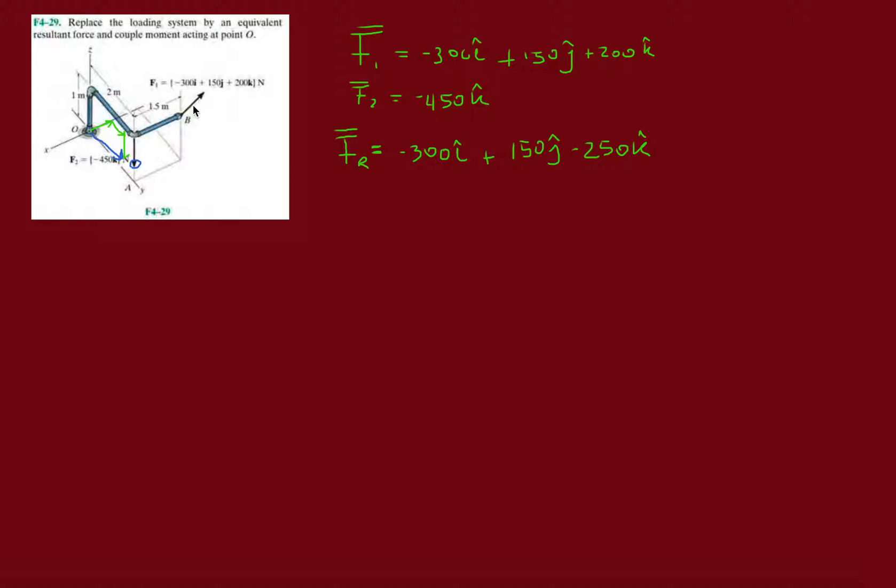This negative k component pushes it down, it beats out this 200k component here. So we know it's pointing in a negative k direction, and this negative 300i is pushing it towards the negative x direction. That's how it should look. You should just be satisfied with this right here.